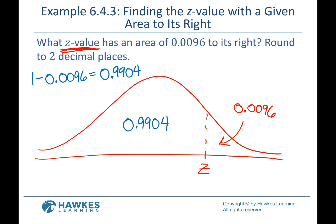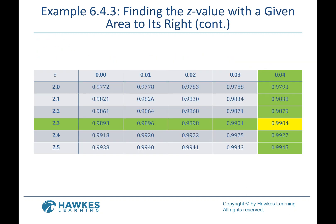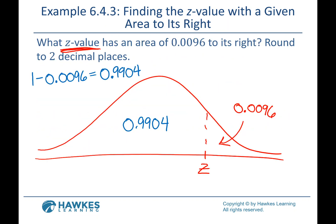We look for 0.9904 in our tables — scan through, and it's actually in there. Our z-value there is 2.34. That's how the textbook does it on this one. That definitely works.